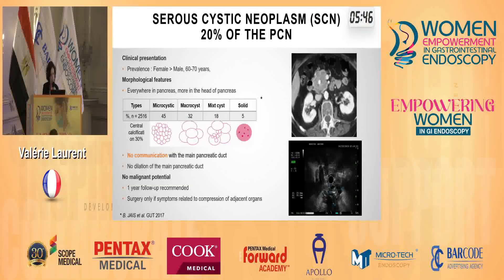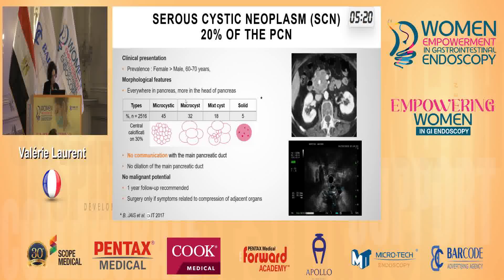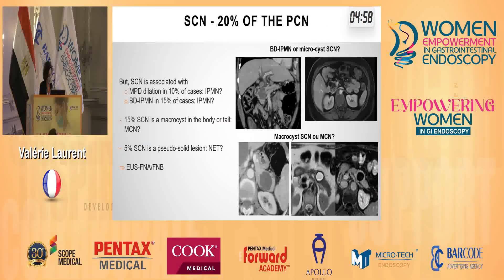The second type is the serous cystic neoplasm, representing 20% of pancreatic cysts. It affects females in around 60 to 70% of cases. It is located everywhere in the pancreas, slightly more in the head. We can see a central calcification on CT scan without contrast, due to the long-standing nature of the lesion. The main type is the macrocystic type, due to numerous cysts inside the lesion, giving a very specific honeycomb aspect on EUS. There is no communication with the pancreatic duct and no dilation of the duct. It is a benign lesion and remains so. However, sometimes the serous cyst is associated with a main pancreatic duct in 10% of cases and with branch duct IPMN in 15% of cases, making it difficult to distinguish.